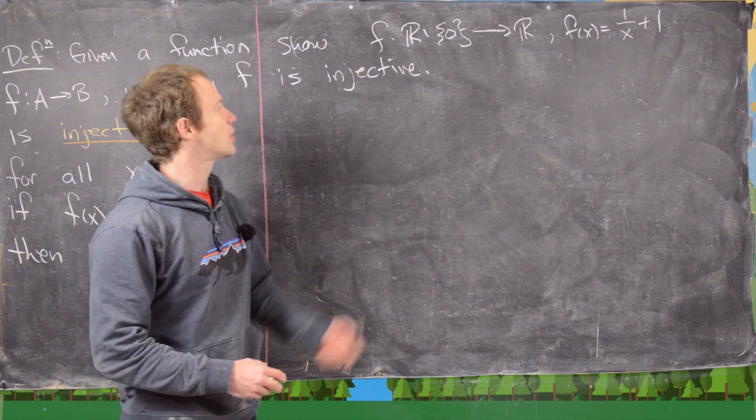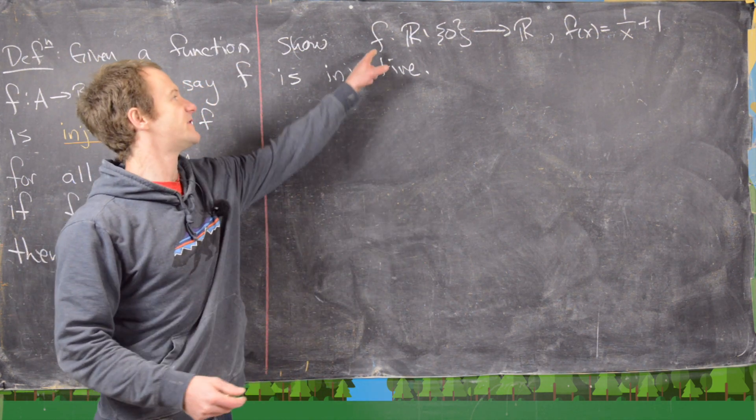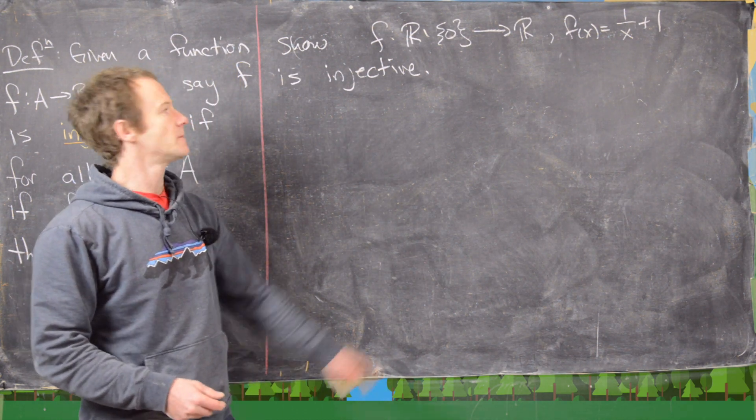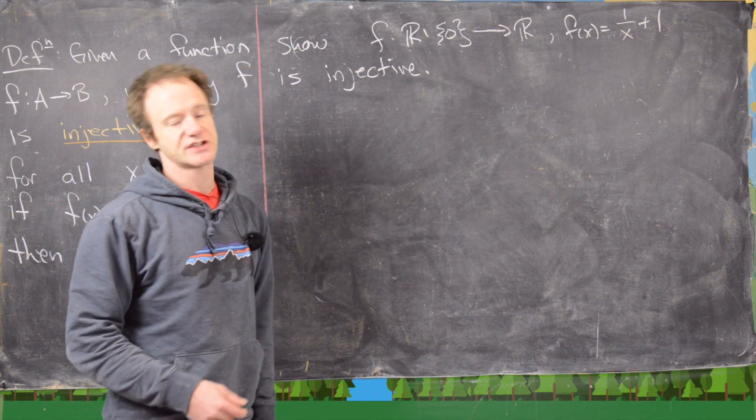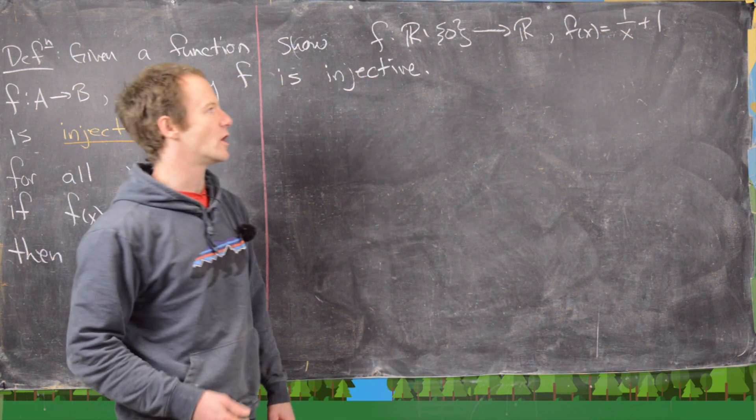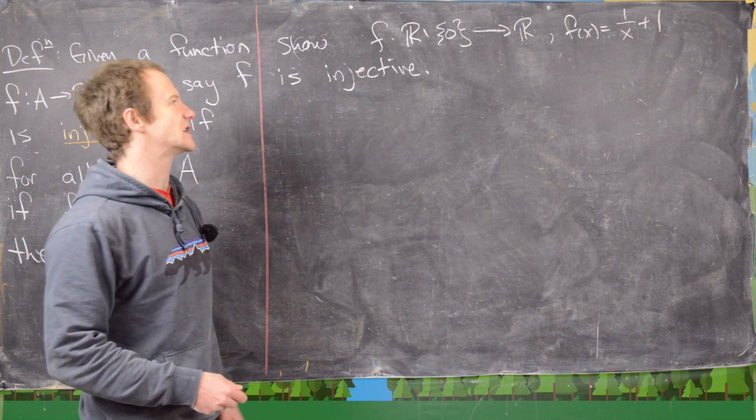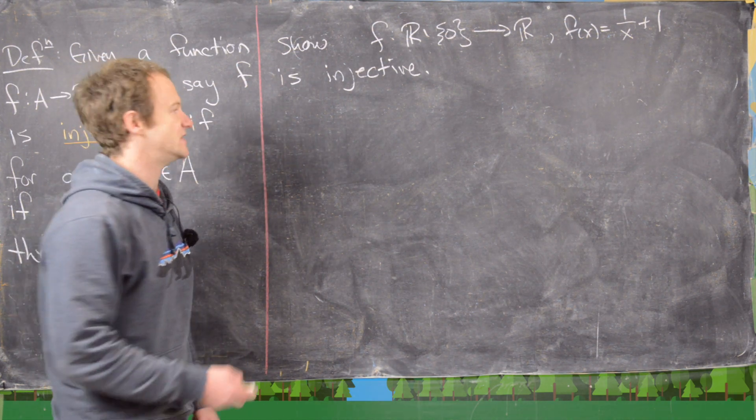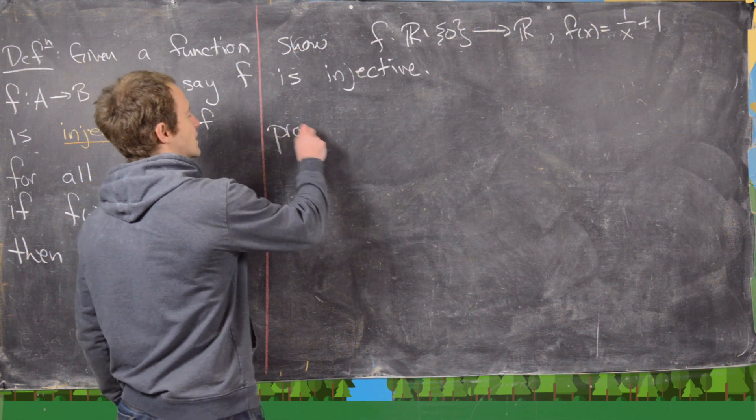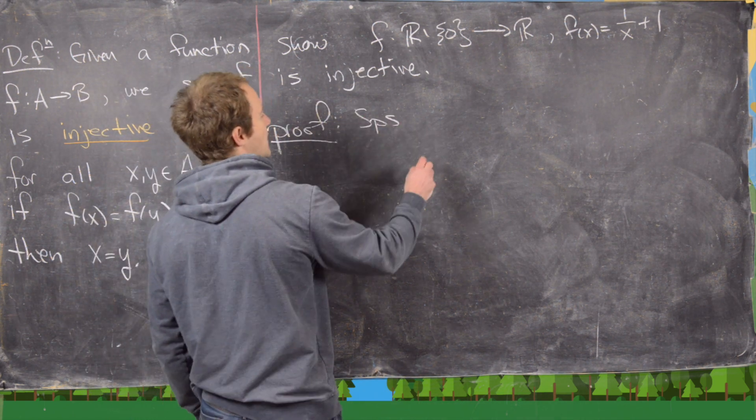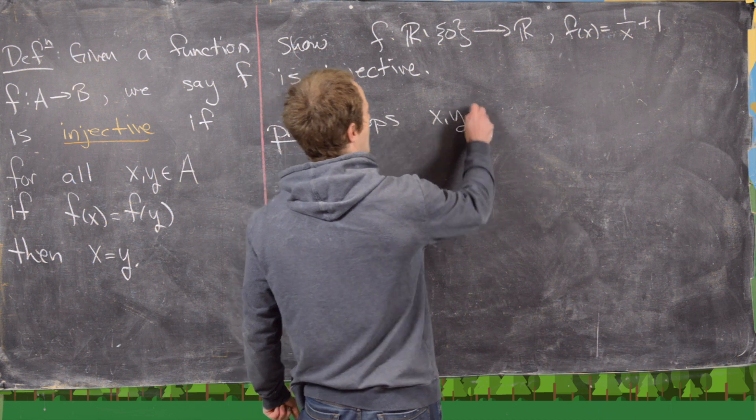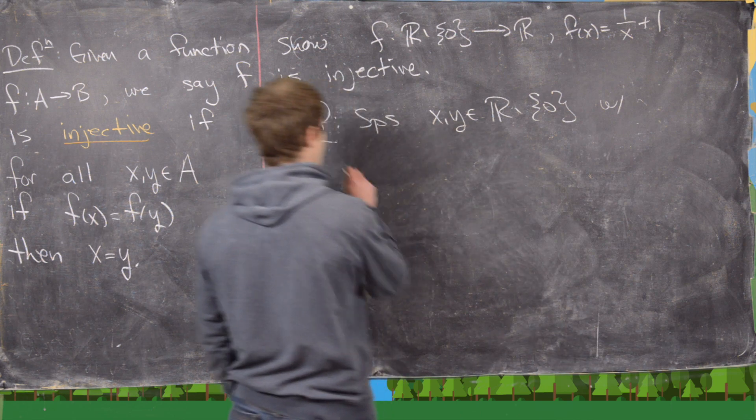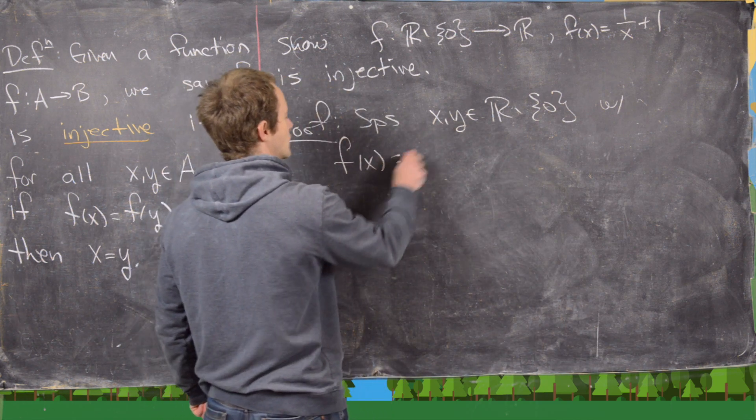Okay, so we want to show the following function is injective. So let's define it with the domain of R minus the number 0, and then the range is just all real numbers. And so f of x is defined by 1 over x plus 1, so that makes it clear why we had to exclude 0 from the domain. We want to show that guy's injective. Okay, so we're going to follow our proof outline. So let's suppose that x and y are in the domain, so that's R minus 0, with f of x equals f of y.